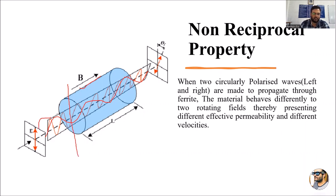One wave will be propagating to the left side and another wave will be propagating to the right side. So two circularly polarized waves — one from the left and another from the right — are made to propagate through this ferrite device. Due to the ferric property, the material behaves differently to these two rotating fields.